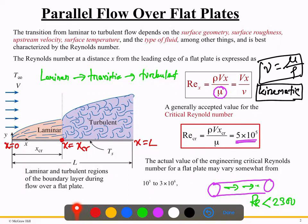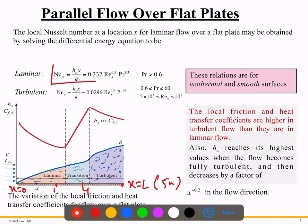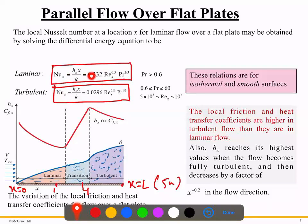We can calculate a local Reynolds number at any position x. For example, if the plate is 5 meters long, we can evaluate Re at x = 4 m. There are established correlation formulas: one for laminar flow and one for turbulent flow. These come from validated experimental correlations, and we apply them directly.